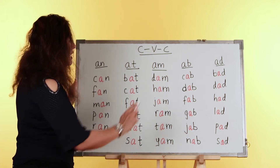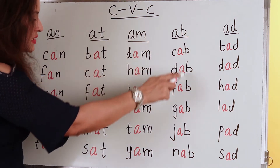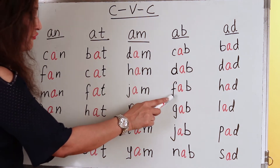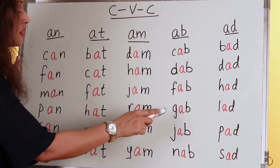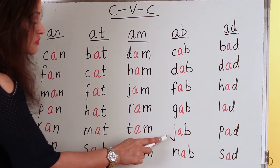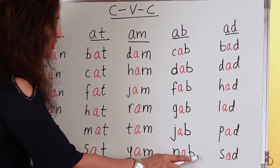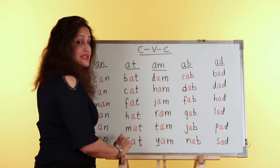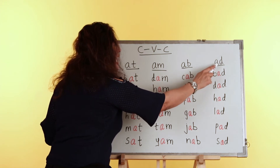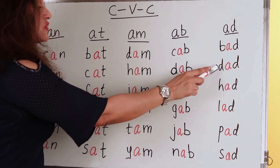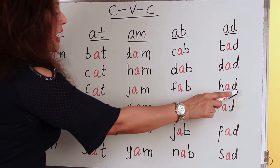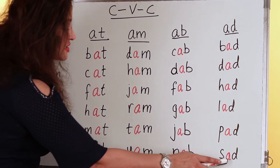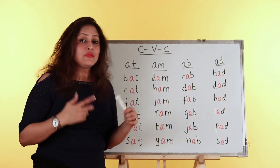Next we have the AB word family — all words ending in AB. We have CAB, DAB, FAB, GAB, JAB, NAB, TAB, and more. Next, the ADD word family: we have BAD, DAD, HAD, LAD, PAD, and SAD.